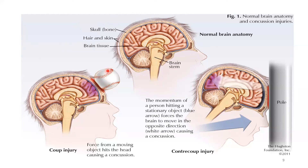When a moving object hits your head, it causes concussion or bleeding — that is considered a coup injury. A contrecoup injury means your head is moving and hits a still object.